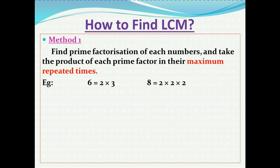Here, 6 and 8 are written as their product of prime factors. 6 is written as 2 × 3, and 8 is written as 2 × 2 × 2. Since 2 and 3 are prime numbers, these are the prime factorizations of 6 and 8. As per this method, we take each prime factor in their maximum repeated times. The prime factors used are 2 and 3.